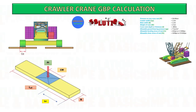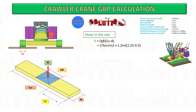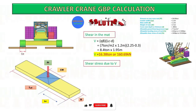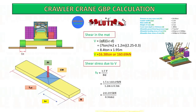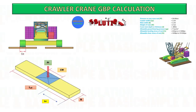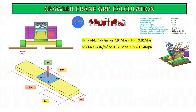Shear stress due to V: 1.5 times V divided by width of mat multiplied by thickness. Since bending moment and shear stress are less than the allowable bending moment and shear stress of the mats, the crane mats are able to distribute the pressure on the ground.